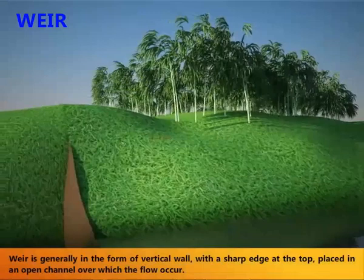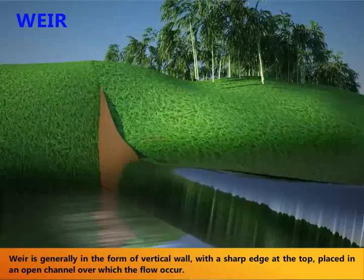Weir. A weir is generally in the form of a vertical wall with a sharp edge at the top, placed in an open channel over which the flow occurs.